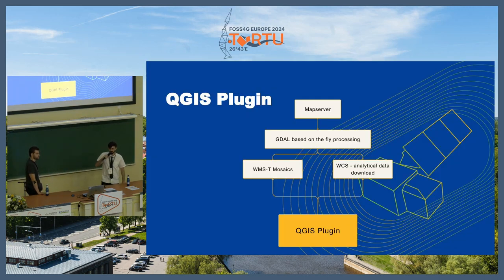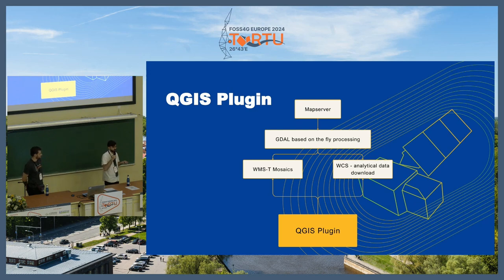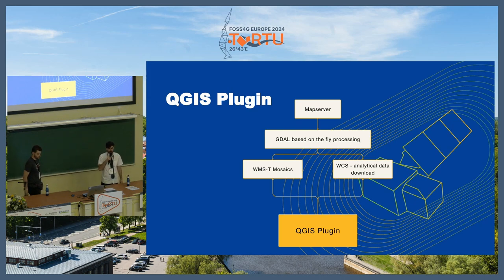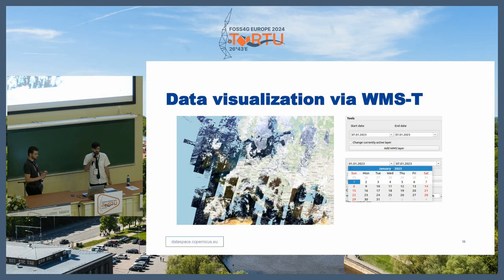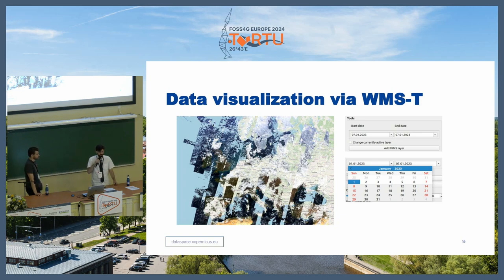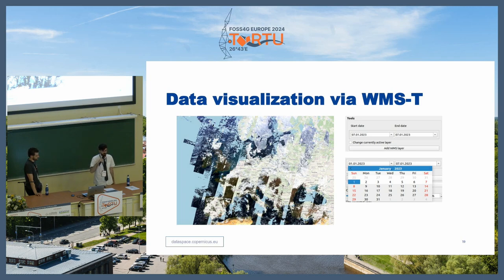The final step in our pipeline is a QGIS plugin, which sits between the user and our OGC services. The main goal of this plugin is to provide an easy tool that handles all requests and gives users easy visualization and easy access to data through WCS and WMS. You can visualize data by simply choosing a datetime and, hitting one button, you can add a whole dataset — a new layer to QGIS — corresponding to one month or one week of data.